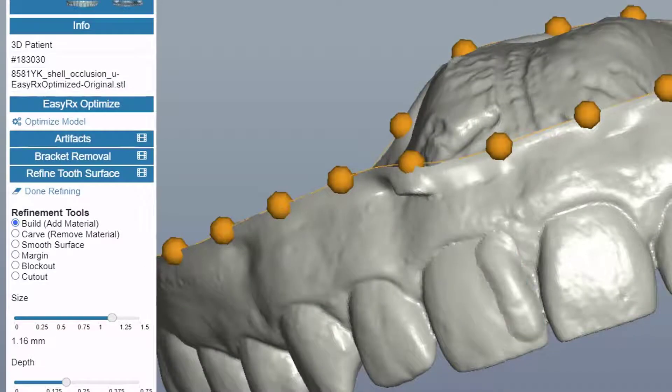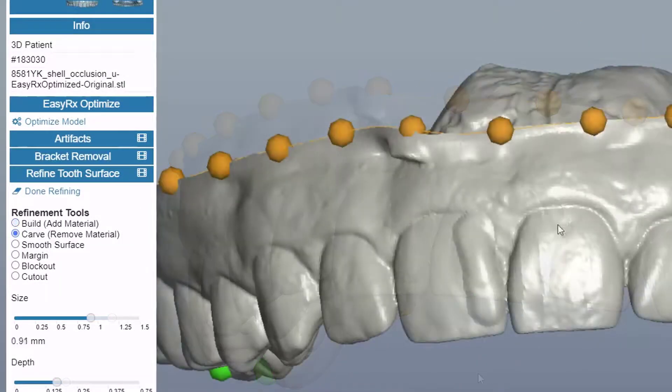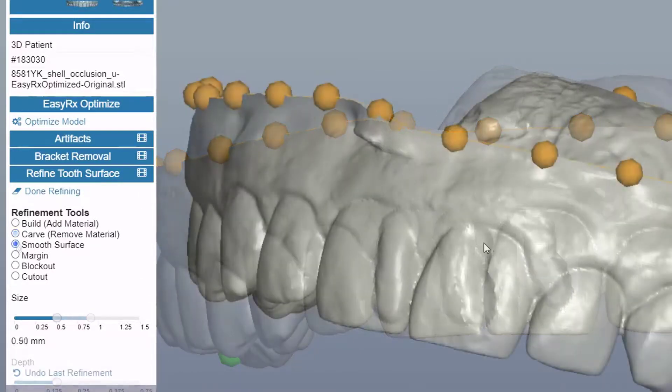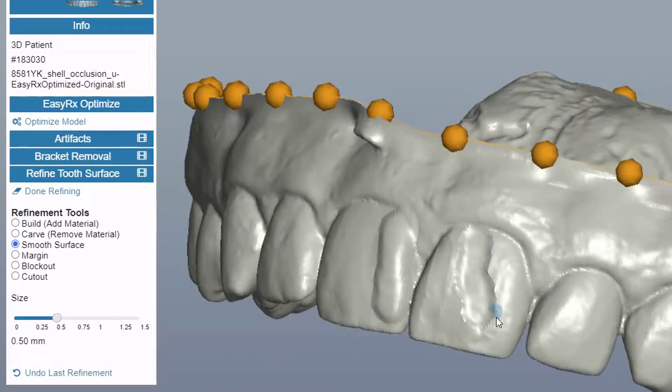Build allows you to add material to the surface of the tooth, while Carve removes material from the surface of the tooth. You can smooth any imperfections on the tooth surface.